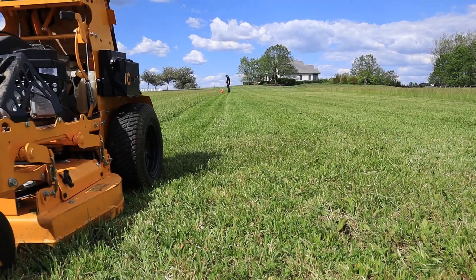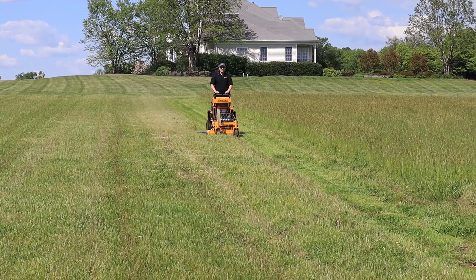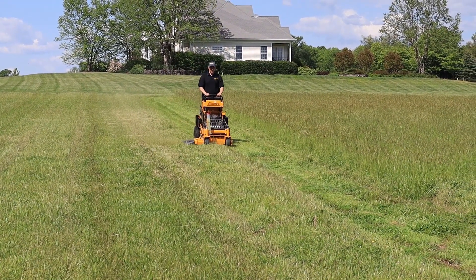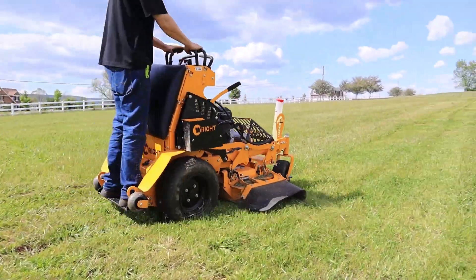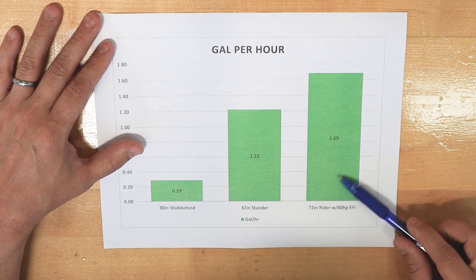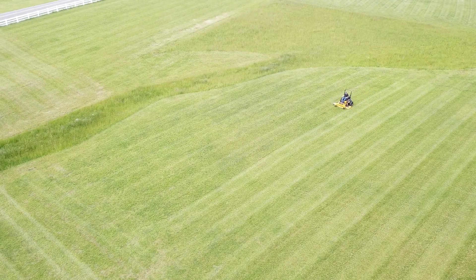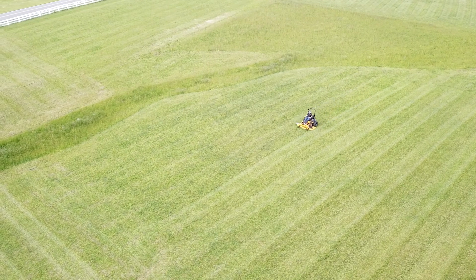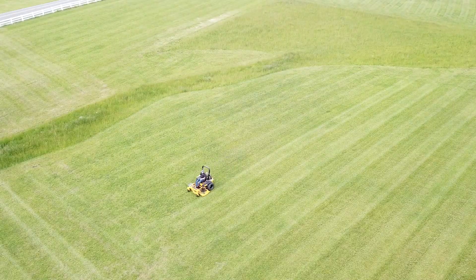And then we ran a 32-inch stander B. So that's one of our smaller stand-on mowers. It's a rider, has a V-twin carbureted engine. Those engine characteristics become important. And then we also ran the test with a 72-inch rider with a 40 horsepower EFI engine. This is a ZXT, big, heavy, highly productive mower.